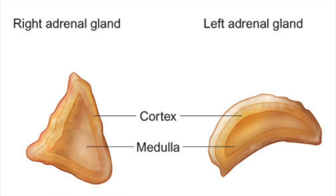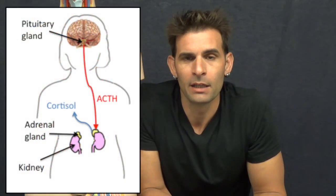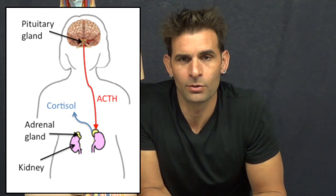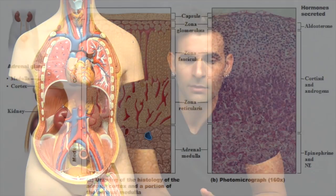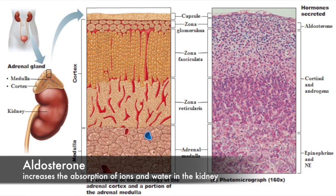The adrenal cortex is stimulated by adrenocorticotropic hormone secreted by the anterior pituitary. There are three zones within the adrenal cortex. Working from the outside in, we have the zona glomerulosa, the zona fasciculata, and the zona reticularis.